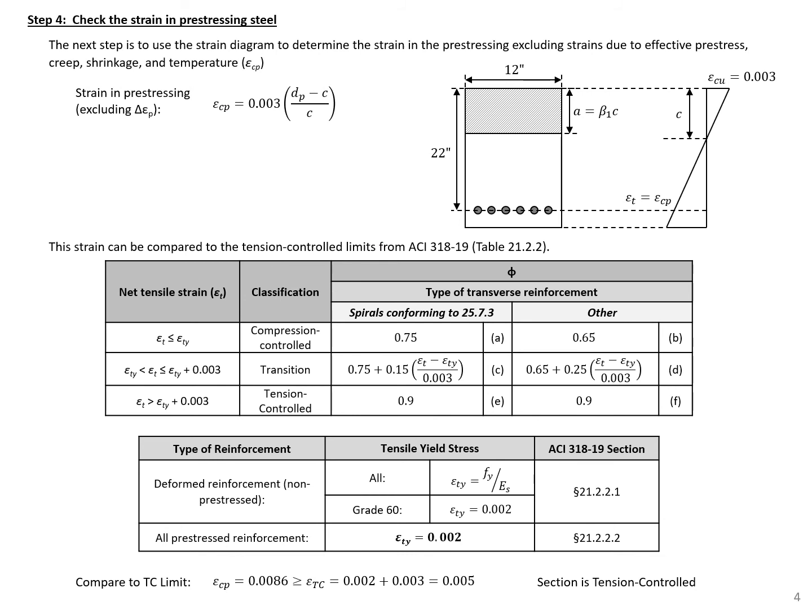Next, we check the strain in our prestressing steel using the strain diagram. We assume a linear strain distribution across the section depth, with the top fiber strain equal to 0.003 as specified by ACI. Knowing the neutral axis depth, the distance from the neutral axis to the strands is d sub p minus C.